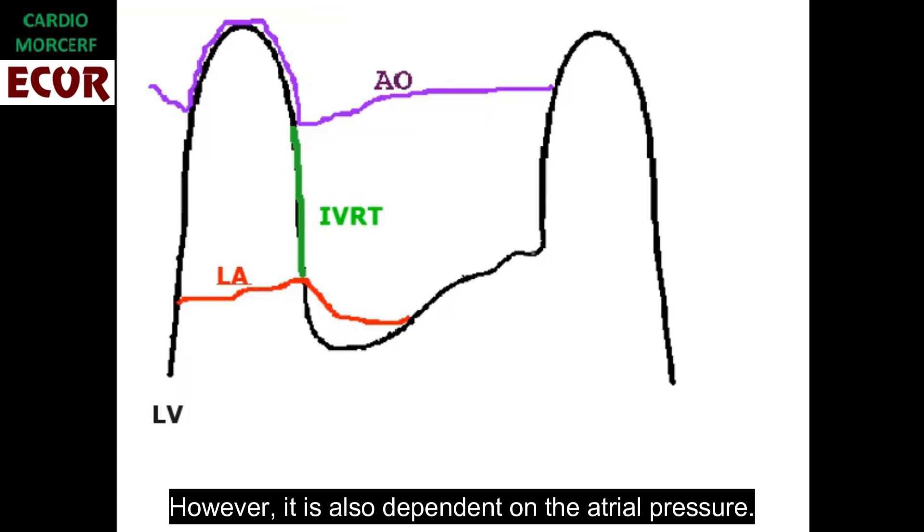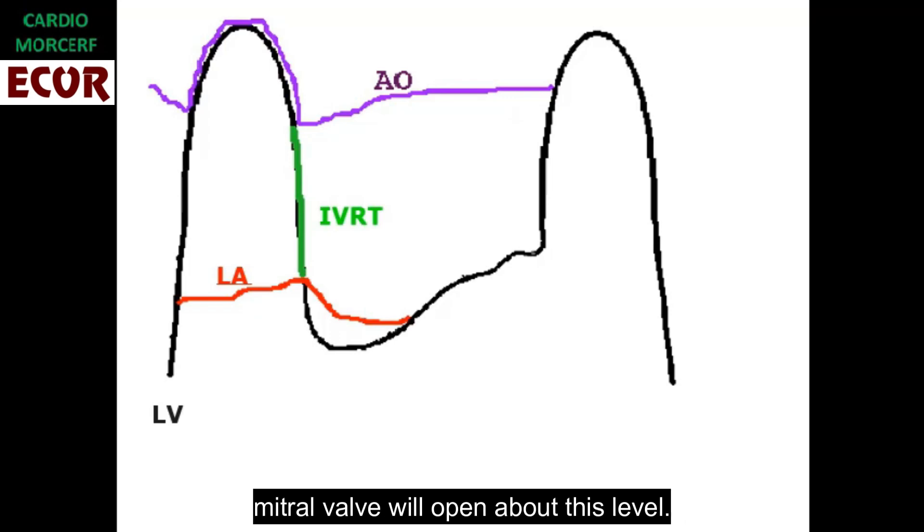However, it is also dependent on the atrial pressure. When the patient is worse, the left atrial pressure is higher, and the mitral valve will open about this level. Although the isovolumic velocity of relaxation of the patient is the same.